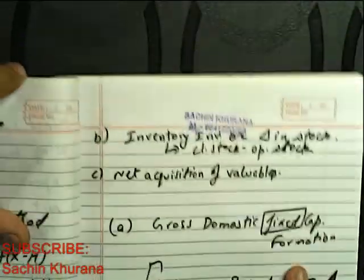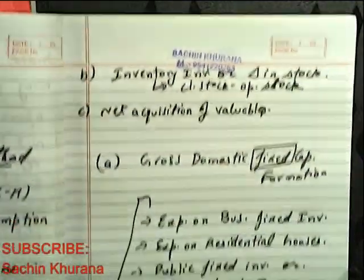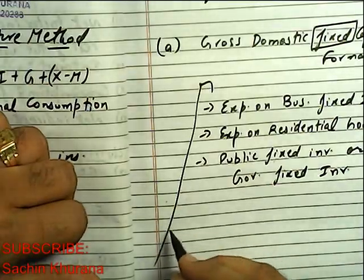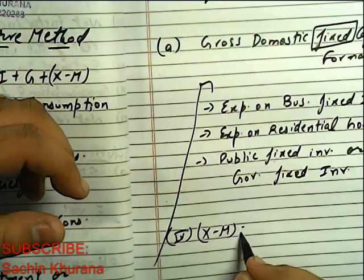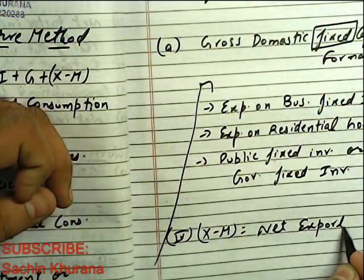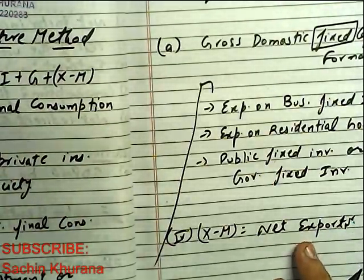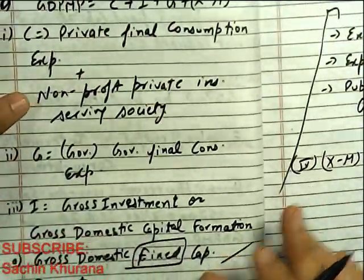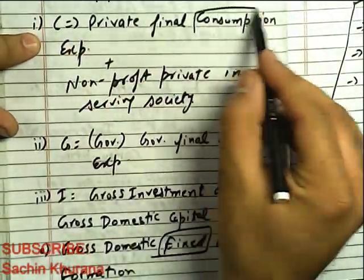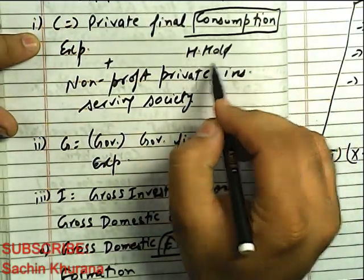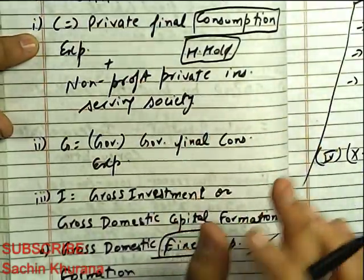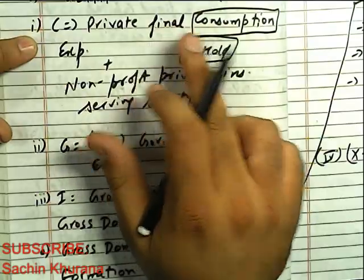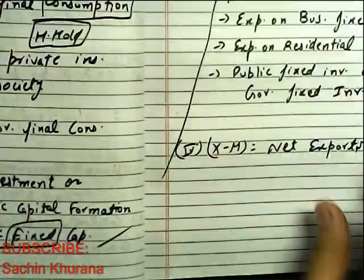Net exports (X - M) covers the export and import of all three — C, I, and G. Also note that when we talk about Private Final Consumption Expenditure, households are obviously included, but there is an exception: when companies or firms spend to serve or attend to their guests, that expenditure is also part of Private Final Consumption Expenditure.